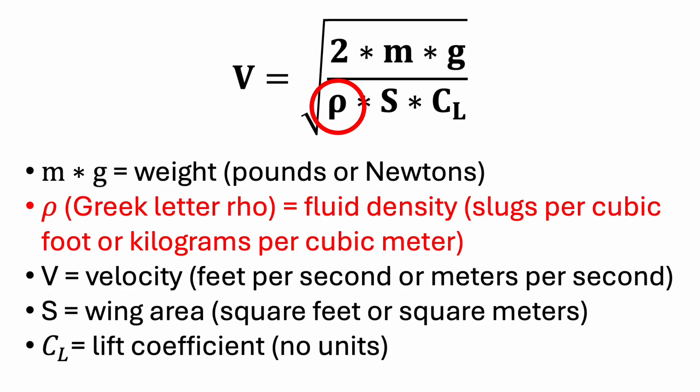It's difficult to demonstrate the effects of changing the air density since this depends on the temperature, the pressure, and the humidity, but you would see similar results. Airplanes flying in less dense air would need to fly faster to generate enough lift force to stay airborne, whereas planes flying in more dense air would fly slower.